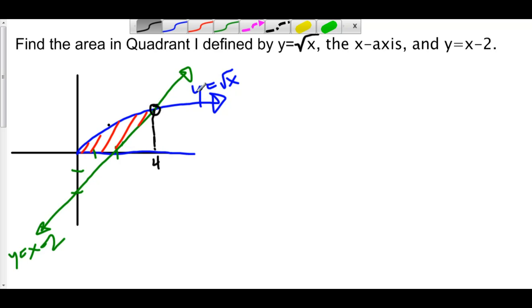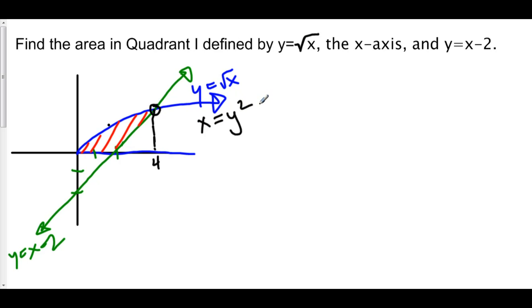The problem is that our functions are written as y equals something in terms of x, but now we want x equals — a function x of y. So I'm going to rewrite y equals root x by solving for x: squaring both sides gives x equals y squared. That's the blue function. And for the line, adding 2 to both sides gives x equals y plus 2. So we're taking the integral of (y plus 2) minus y squared, dy.